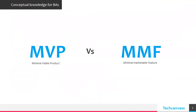So let's get started. First of all, let's look at the expanded format. MVP stands for Minimal Viable Product, whereas MMF stands for Minimal Marketable Feature, whereas MMR stands for Minimal Marketable Release.